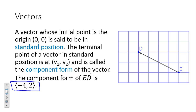In this particular case, the component form of ED — we went 4 units left and 2 units up. Since we went from E to D, 4 units left and positive 2 up: left is negative, up is positive, right is positive, down is negative. So we end up with a component form of ⟨−4, 2⟩.